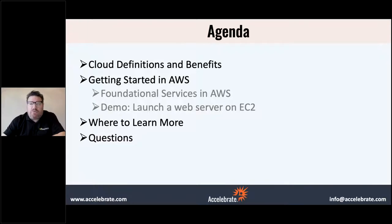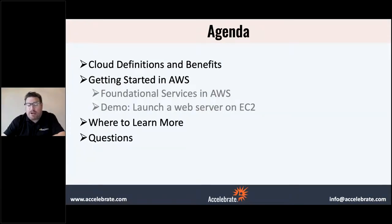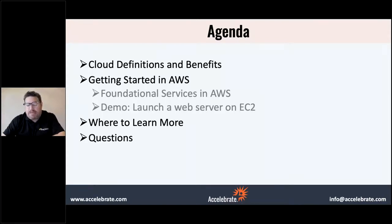We'll do a quick intro to the main foundational services, a quick launch of an EC2 virtual machine with a little web app running in it. Then we'll finish off talking about the authorized AWS training curriculum — actual authorized AWS content built by AWS and delivered by instructors that they certify. There are a lot of options out there, and some of them were built five years ago. AWS is such a moving target — things change weekly — so having the AWS curriculum team continuously updating the courses makes a big difference.